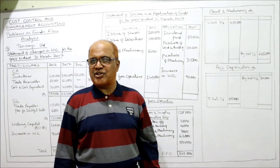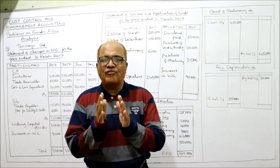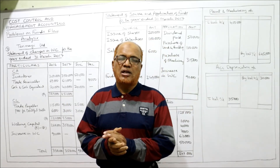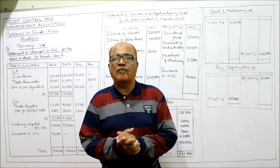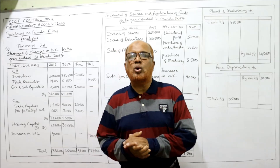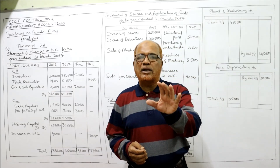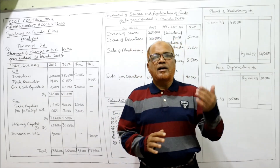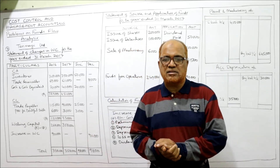Welcome to the channel. I'm Hashem Ali Khan. So far we have completed six problems on funds flow statement. In this video, I'm going to start the seventh problem. If you are regularly watching all the videos, you are now in a position to attempt problems on funds flow analysis — two statements: statement of changes in working capital, and statement of source and application of funds. In the statement of changes in working capital, we take only current assets and current liabilities. In the statement of source and application, we take all non-current items.